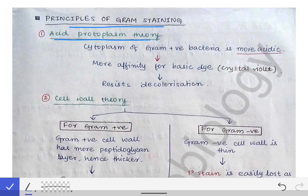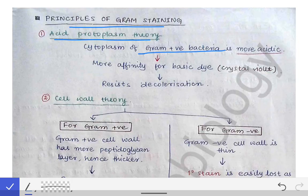The first theory is the acid protoplasm theory — that is a primitive and very basic theory, not in use nowadays. We will go over it only superficially. This theory states that the cytoplasm of the Gram-positive bacteria is more acidic than that of the Gram-negative bacteria.